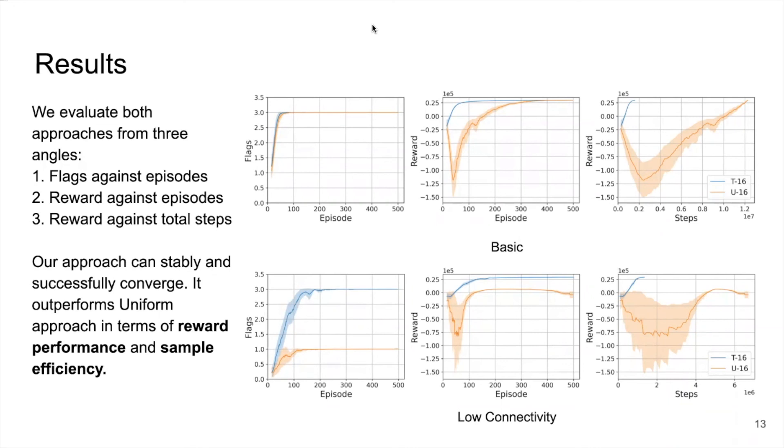In maze basic, both approaches converge to the same level of reward performance, but our approach heavily outperforms uniform approach in terms of sample efficiency. In maze low connectivity, uniform approach fails to collect all flags. Similar results are also observed in other maze variants.